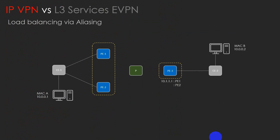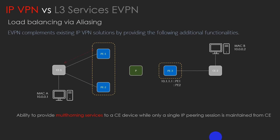Next is IP VPN, which is the traditional L3 VPN solution, versus layer 3 services provided by EVPN. EVPN complements the existing IP VPN solution with new added functionality: the ability to provide multi-homing services to a CE while maintaining only a single IP peering between PE and CE. This allows load balancing in a multi-homing scenario for L3 services using EVPN.